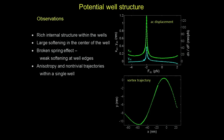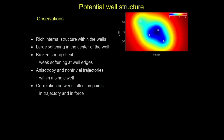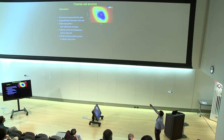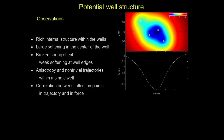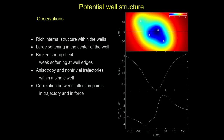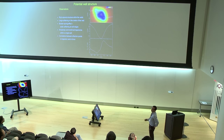We also observe large anisotropy, a non-trivial trajectory, and a correlation between the inflection point and the softening point. To explain this, we took a very simple model with four classical pins: two of them placed very close together at about a xi distance apart, and two others at a distance slightly larger than xi. Taking a line cut on this potential landscape, it seems like a Lorentzian potential — but if you take the derivative you see a clear rounding of the restoring force. However, what we're measuring is not exactly that — we're measuring the potential along the actual trajectory, which is far more intricate.